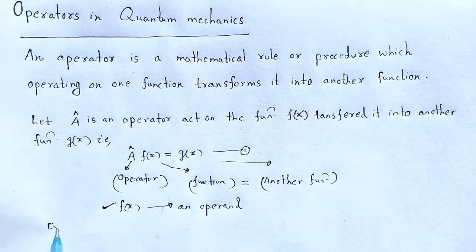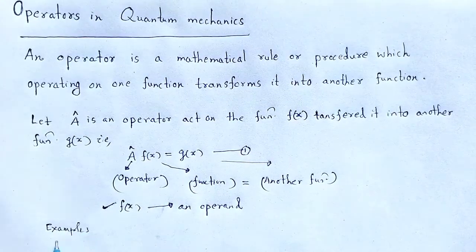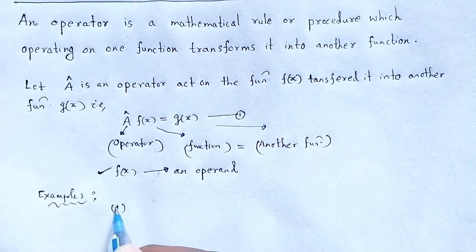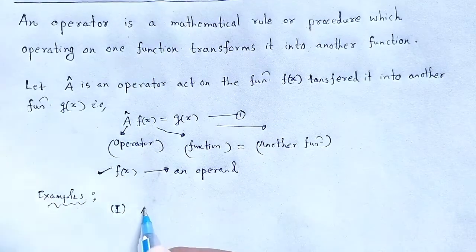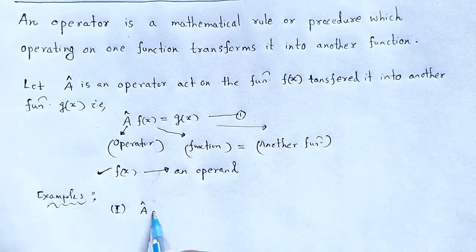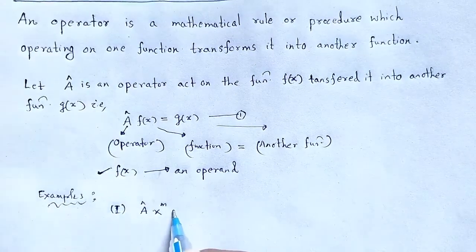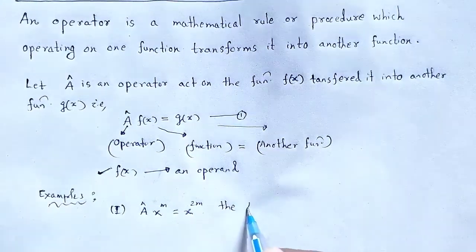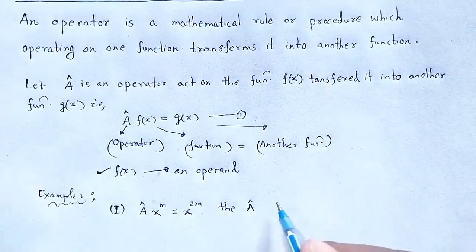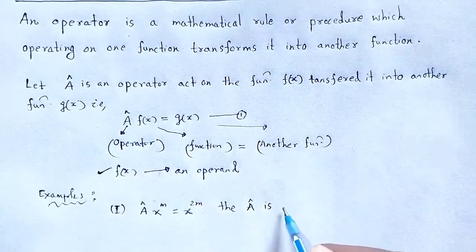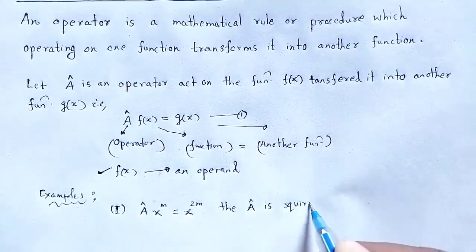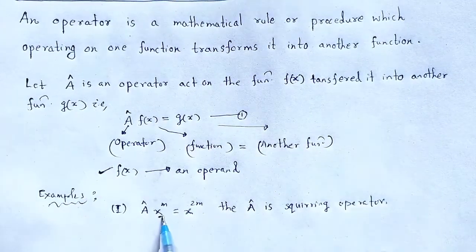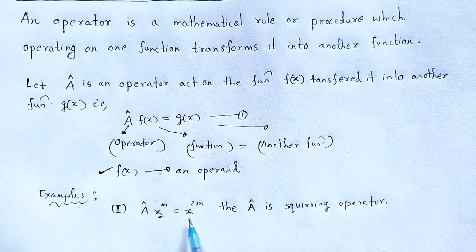Some examples of operators. Example number one: let operator A-cap operate on x to the power m — it gives rise to x to the power 2m. That means that operator A-cap is known as the squaring operator. When it acts upon a function, it squares that particular function.